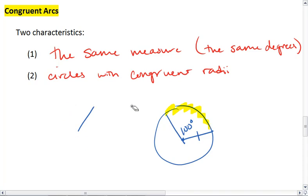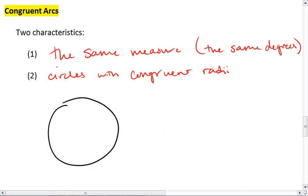So what we have to have, what we need to see, is two circles with congruent radii. The radius could be anywhere in the circle, it doesn't matter.